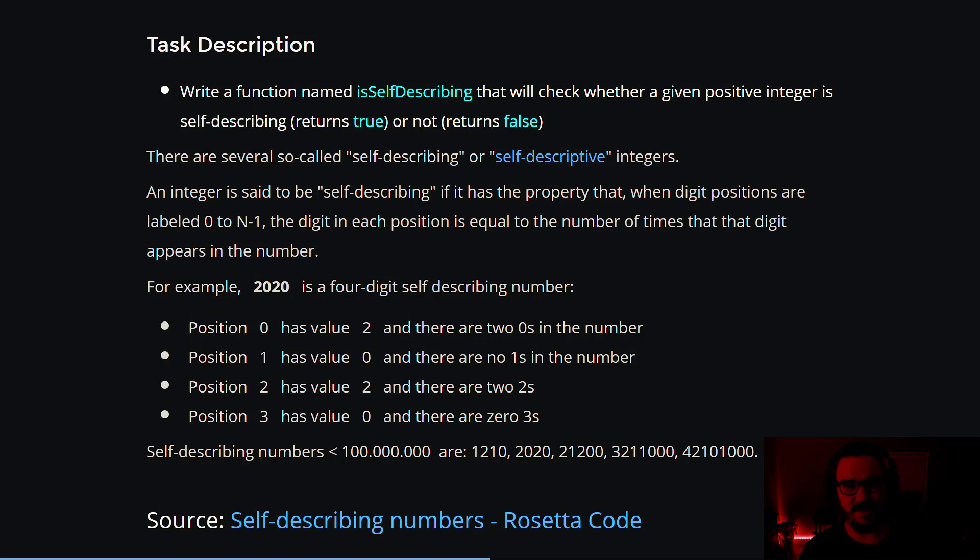In this case, the value is two, so we expect to have two zeros. It's 2020 is the full number, so we do have two zeros, so that checks out.